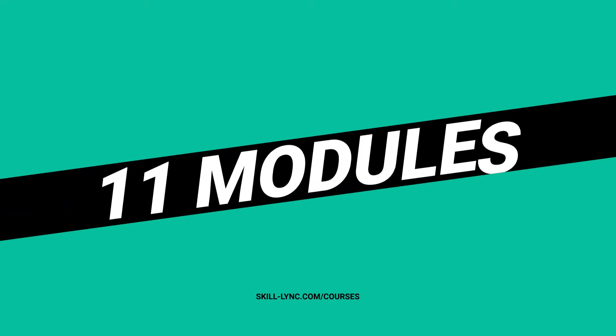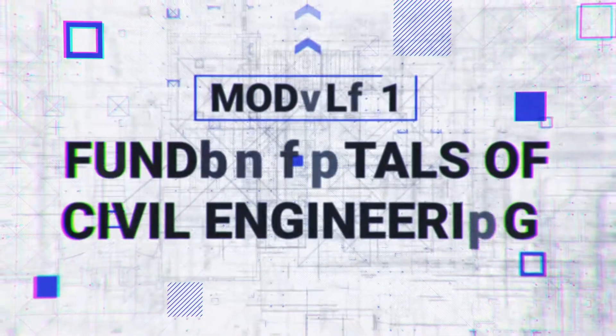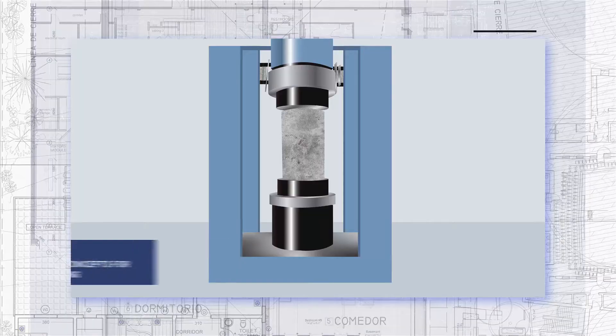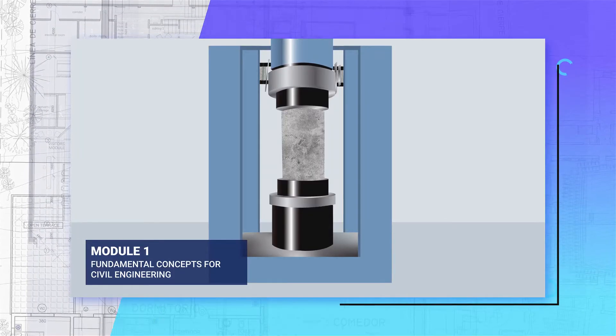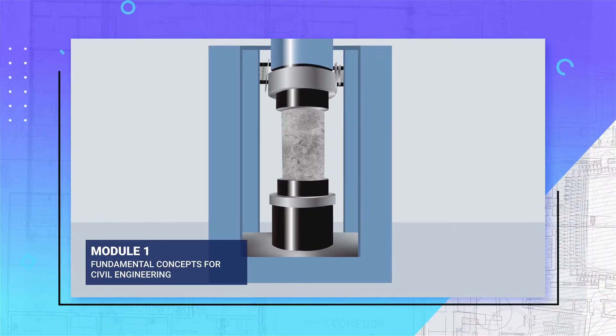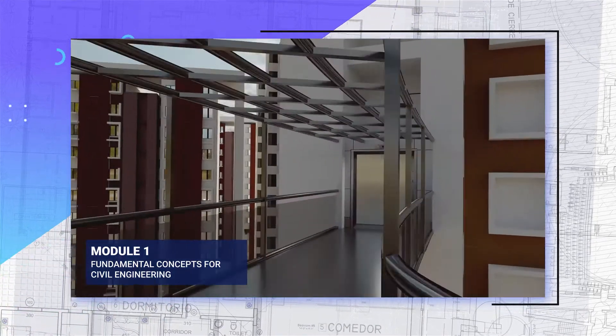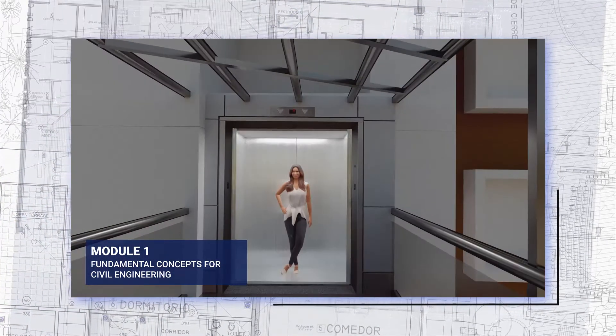The course has 11 modules. Starting with the fundamentals of civil engineering in Module 1, you will learn about the different types of building materials, from the compressive strengths of concrete to the use of steel in structures.